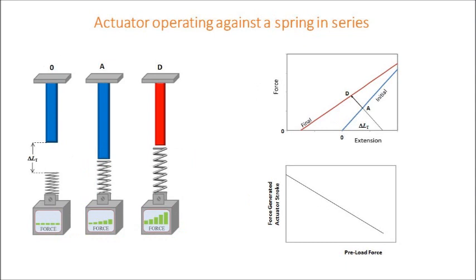Many practical actuation examples operate against a spring. Here we see a spring attached to the actuator in series, and as the actuator contracts, it not only contracts in length but generates a higher force by stretching the spring. The actuation against a spring can be represented on the force extension curves by overlaying them with another line representing the spring extension. The slope of the line A to D in the top right figure represents the spring stiffness. We pre-stretch the actuator from zero to A and then actuate it, transitioning from A to D along the line representing the spring stiffness. Because of the diminishing distance between the final and initial force extension curves, both the force generated and the actuation stroke decrease as the pre-load force increases.